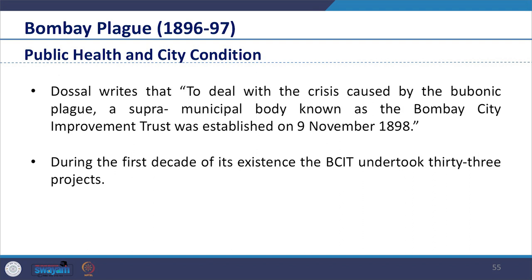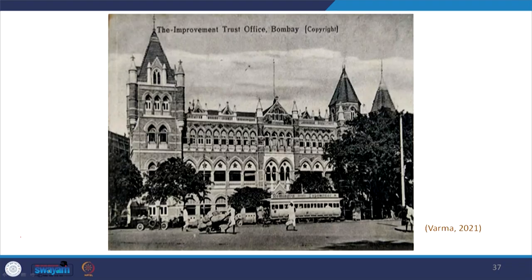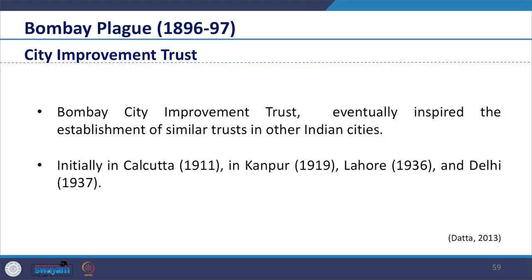During the first decade of its existence, the BCIT undertook 33 projects. Bombay City Improvement Trust eventually inspired the establishment of similar trusts in other Indian cities — initially in Kolkata in 1911, then notably in Kanpur in 1919, Lahore in 1936 and Delhi in 1937. We see here the origin of planning legislation in the Indian context.